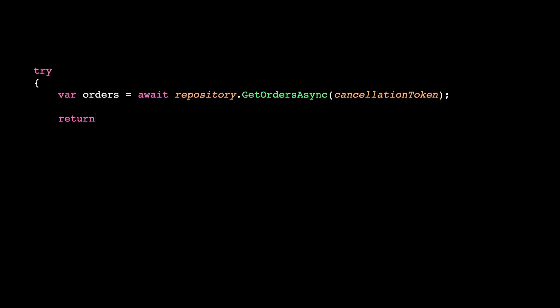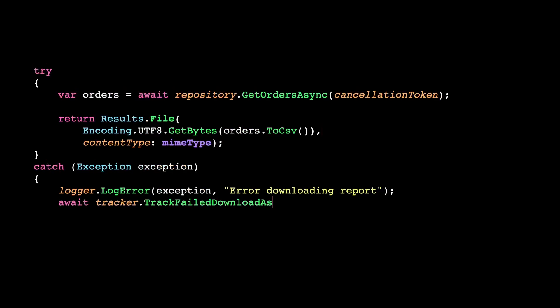We've saved some resources now. We're doing this for the database, but obviously this could apply to multiple types of expensive operations. But wait, there's something here that seems wrong. Looking into this code, when I have an exception, I'm calling a service to track what happened — and that service supports the cancellation token.